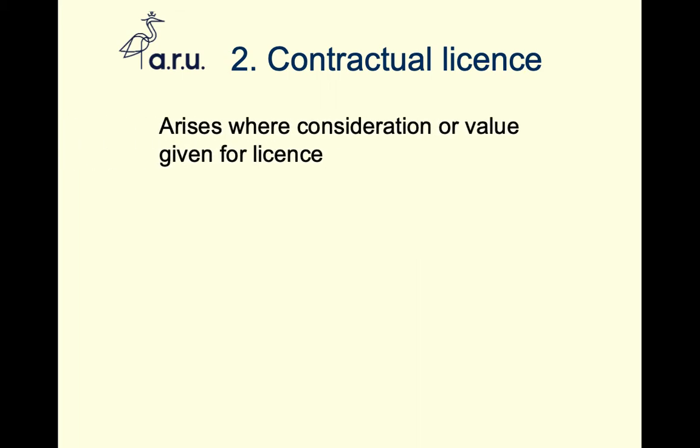Escalating then to where there may be some other form of evidence and some form of consideration for the permission to be on land. A bare license is just this free invitation that is either expressed or implicit. However, with contractual licenses, we have a situation where consideration — value, some form of employment — is given in return for the license.